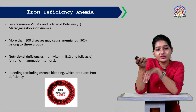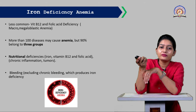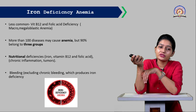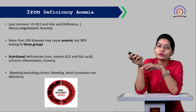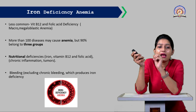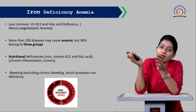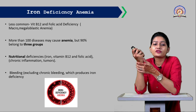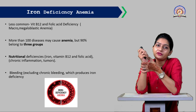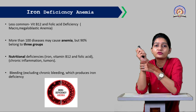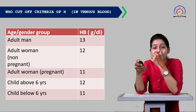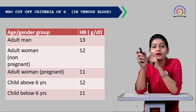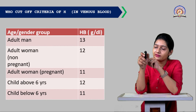More than 100 diseases may cause anemia, but 90% belong to three groups. The main nutritional deficiencies are iron, vitamin B12, and folic acid. Chronic inflammation and tumors also lead to nutritional deficiency — chronic inflammation is not curable, and tumors may develop into cancer, both leading to nutritional anemia. Chronic bleeding that produces iron deficiency is another cause.